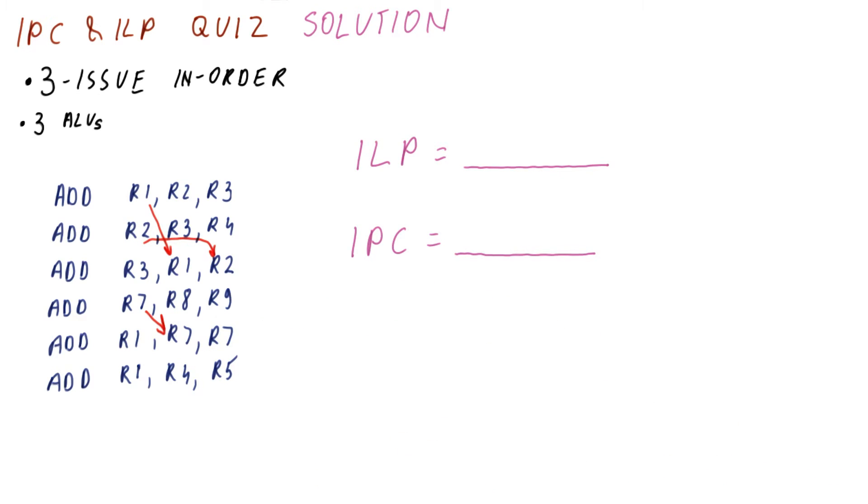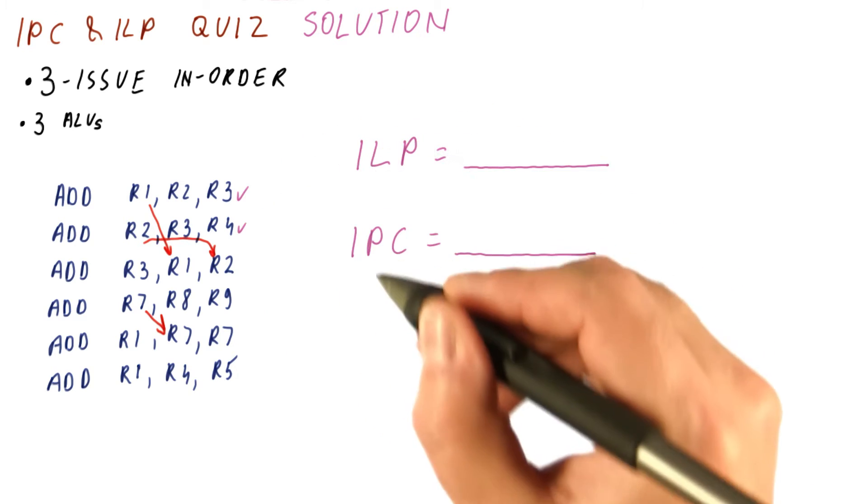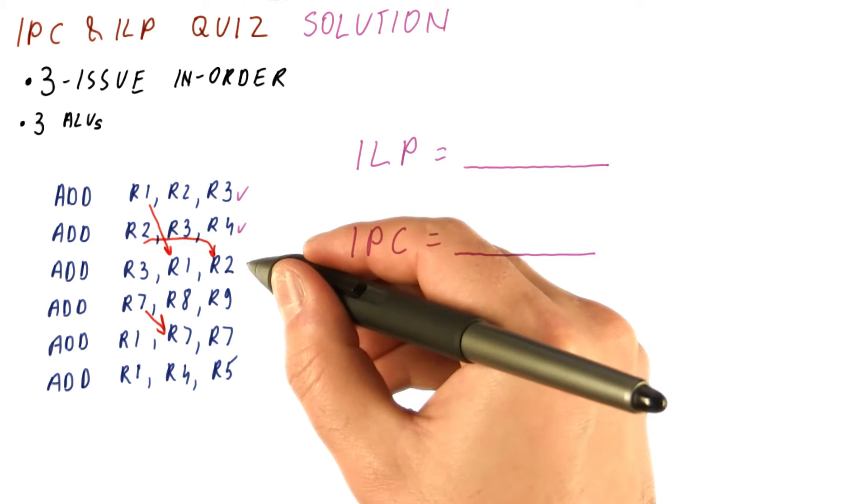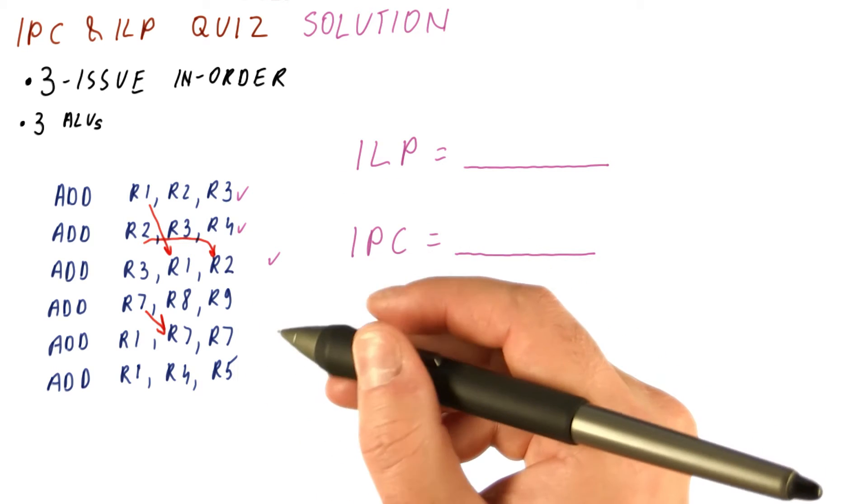So now let's look at our ILP. For ILP, we can do this and this in the first cycle. They don't depend on anything. This one needs to be done in the second cycle, because it depends on the first two instructions.